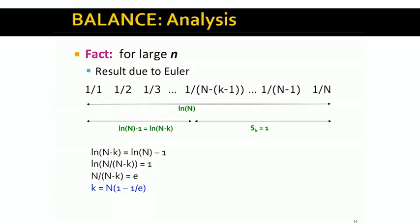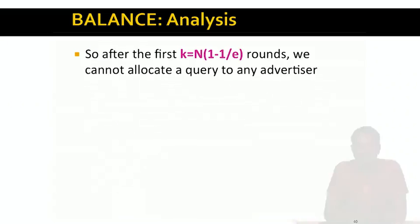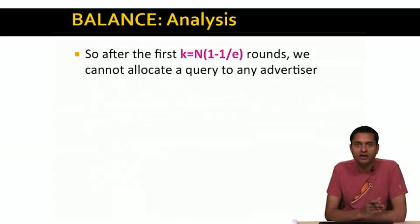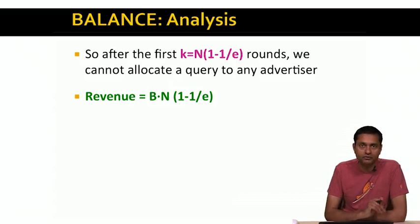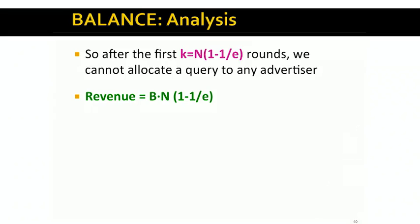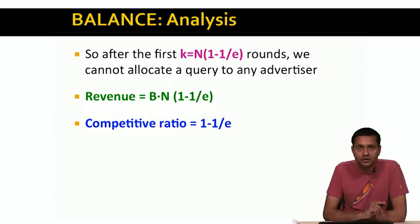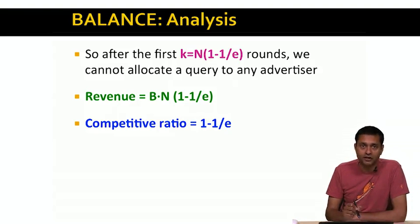We've found the K such that after K rounds we've exhausted the budgets of all advertisers AK through AN, and therefore cannot assign any queries beyond that point. After the first K rounds — where K is N times (1 minus 1/e) — we cannot allocate any query to any advertiser. So the revenue from the balance algorithm is B times N times (1 minus 1/e). Since the revenue of the optimal algorithm is N times B, the competitive ratio of the balance algorithm is 1 minus 1/e.